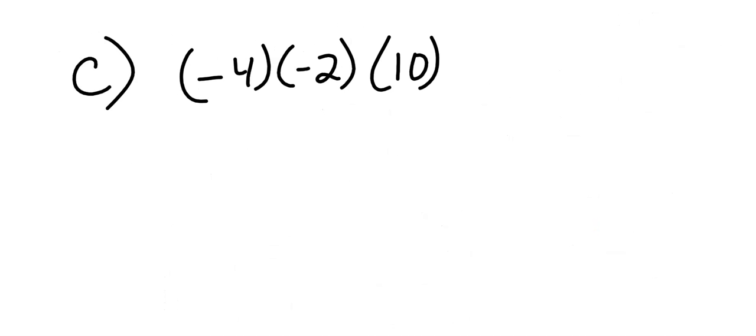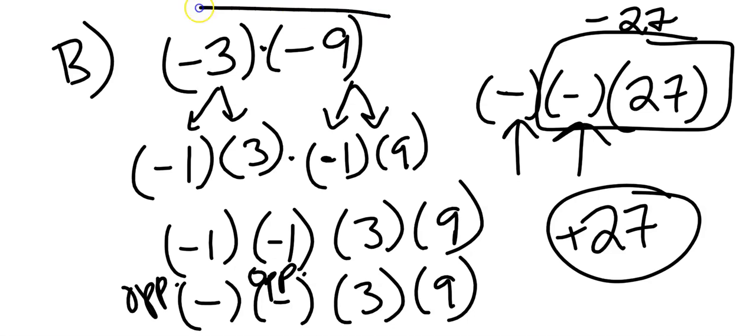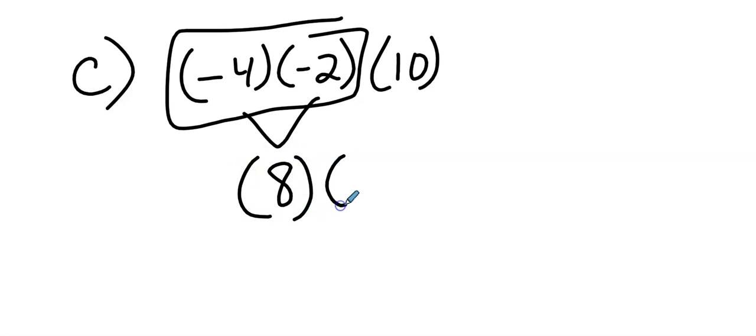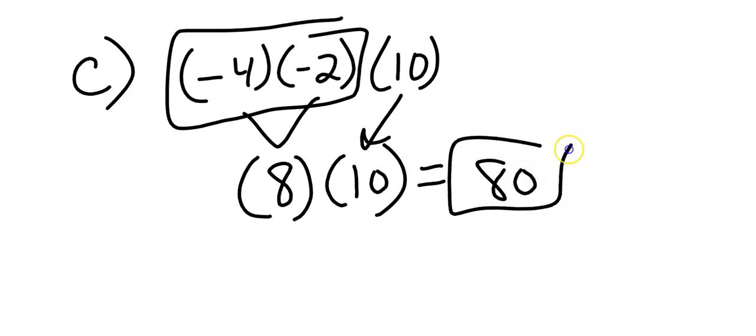Take a look at example C. Negative 4 multiplied by a negative 2. Well we just learned that a negative number multiplied by a negative number yields a positive number. So what happens when you have three numbers? Well a negative 4 times a negative 2 is going to give us a positive 8. And then a positive 8 multiplied by that positive 10 will give us a positive 80.